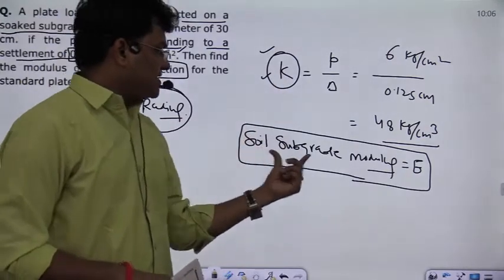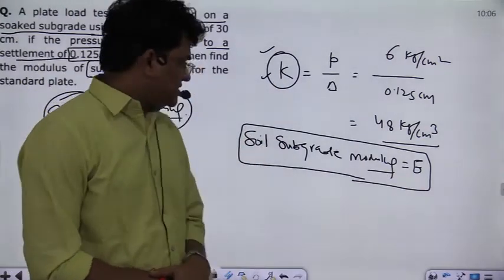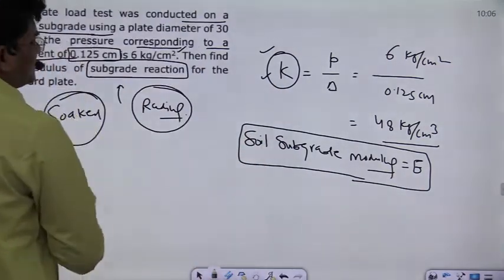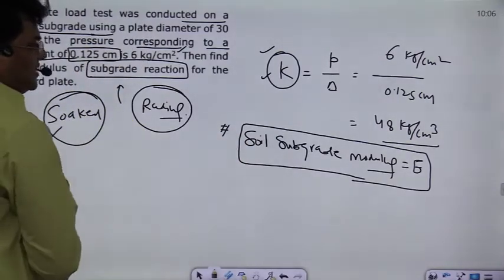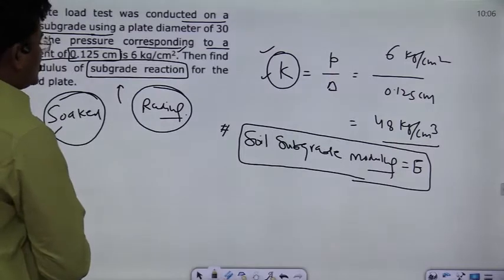Soil subgrade reaction and soil subgrade modulus, modulus of elasticity E, here it is not necessary but it can be a confusing term. So remember, k value is 48 kg per cm³.